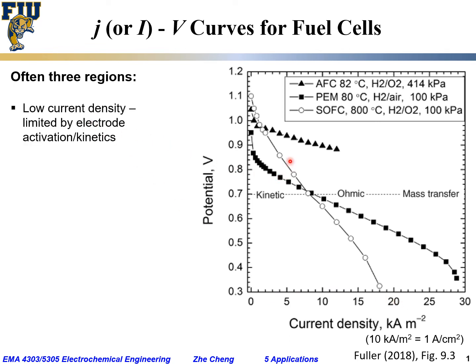We can generally separate the JV curve into three regions. In the beginning, at very low current density — around 1 to 2 kA/m², or about 100 milliamp per centimeter square — the electrochemical reaction is limited by electrode activation, also called the kinetics-limited region. This produces an initial rapid drop in cell terminal voltage.